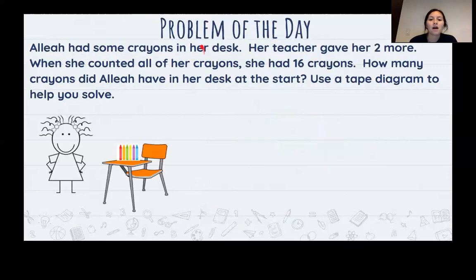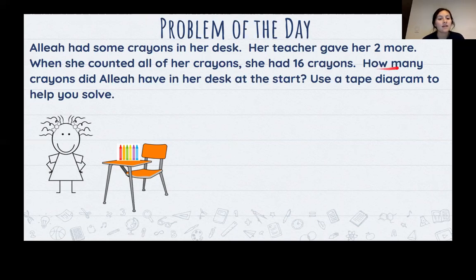All right. We're going to move on to our problem of the day. Let's go ahead and read this together. Good readers. Point your fingers up. Point your fingers on the first word. Aaliyah. The word is Aaliyah. Follow along, please. Aaliyah had some crayons in her desk. Her teacher gave her two more. When she counted all of her crayons, she had 16 crayons. How many crayons did Aaliyah have in her desk at the start? Use a tape diagram to help you solve. All right. Go ahead and pause this and read it one more time to yourself.